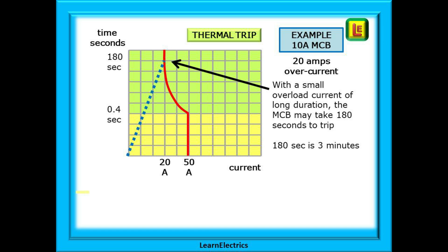In our example after 180 seconds the bimetallic strip has distorted sufficiently to operate the trigger mechanism and the MCB will turn off. 180 seconds is three minutes. A long slow response time but this is what happens.